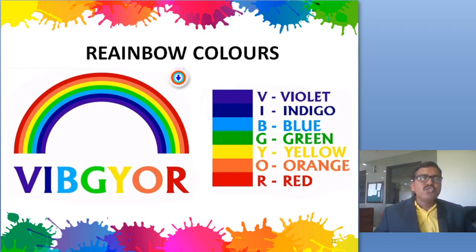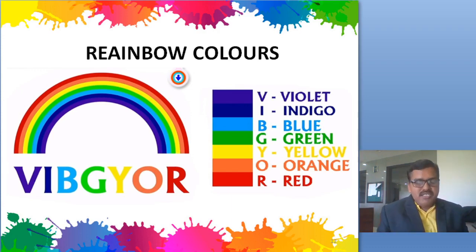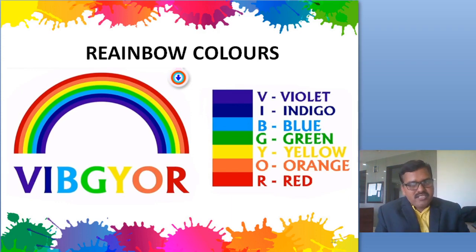So children, today we have learned about primary colors, secondary colors, grayscale, and the colors of the rainbow. This is what we have learned today.